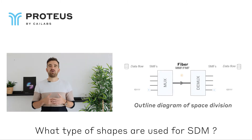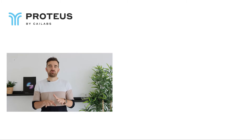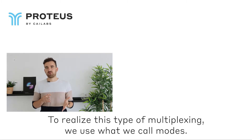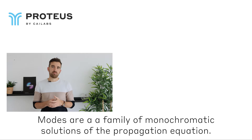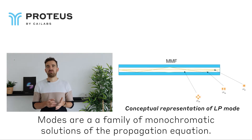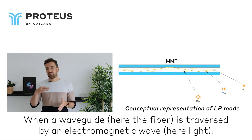What types of shapes are used for SDM? To realize this type of multiplexing, we use what we call modes. Modes are a family of monochromatic solutions of the propagation equation. When a waveguide — here the fiber — is traversed by an electromagnetic wave,